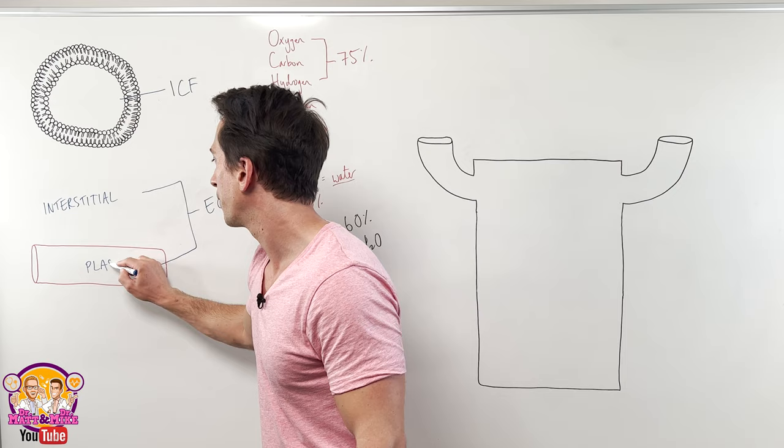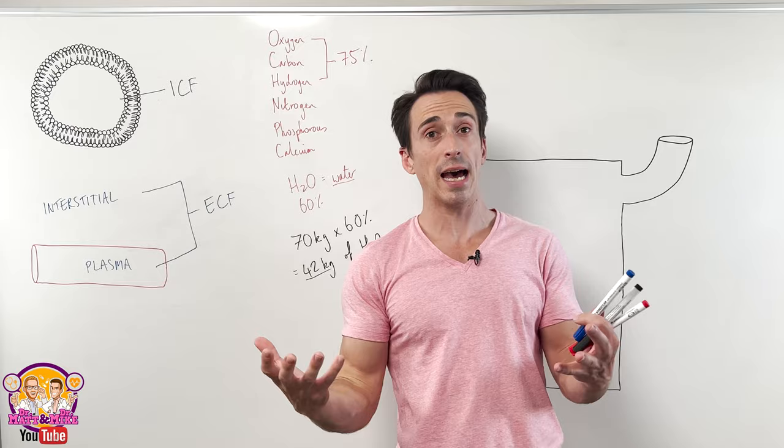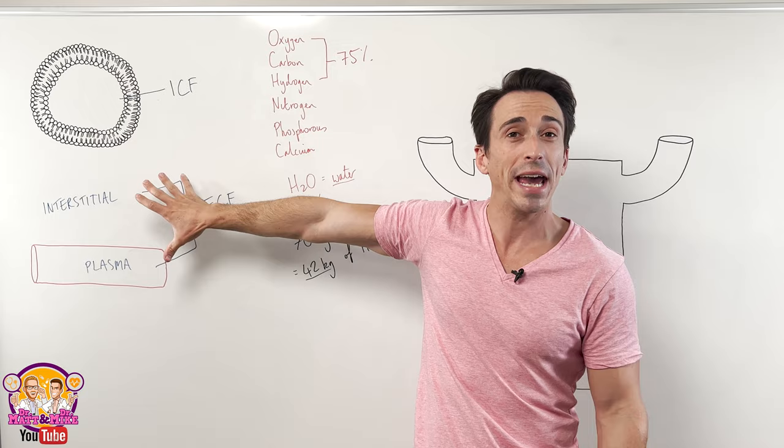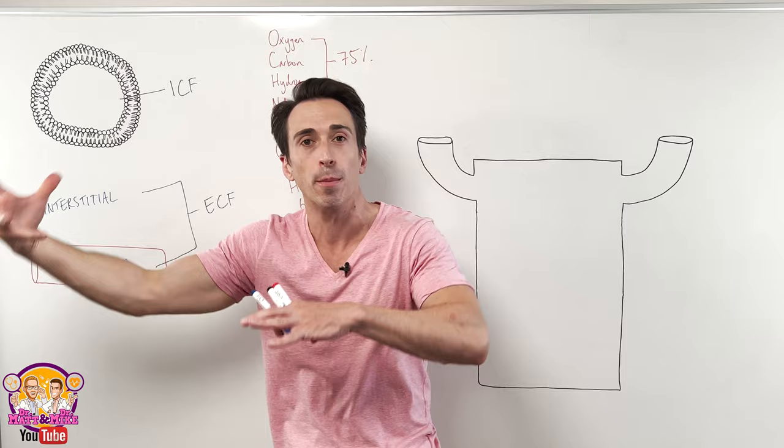So you can see the various compartments of our body that contain water is inside the cells called the intracellular fluid or outside the cell called the extracellular fluid made up of two compartments. The interstitial fluid, which sits outside the cells, but between the cells and also the blood plasma.